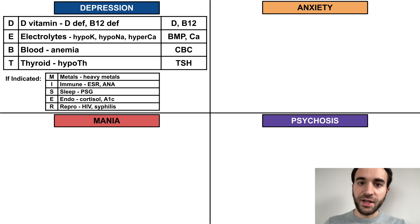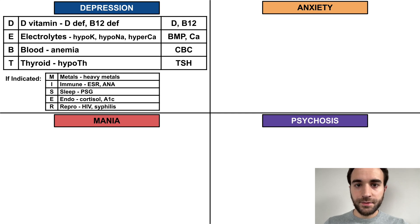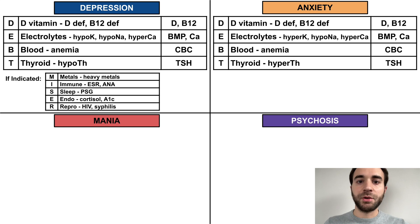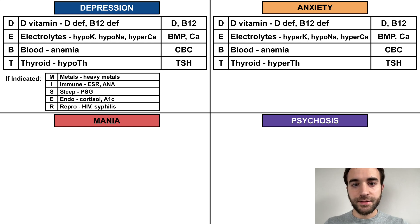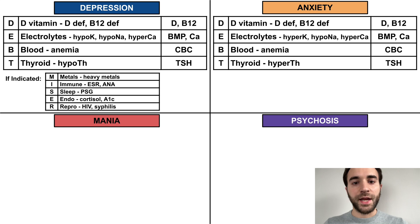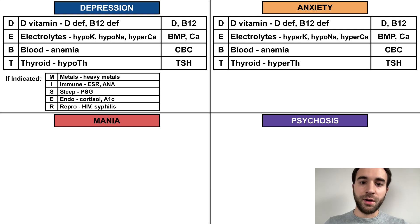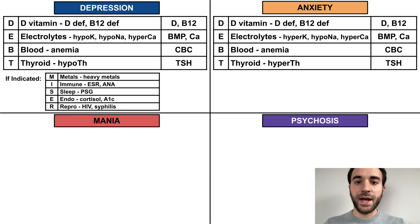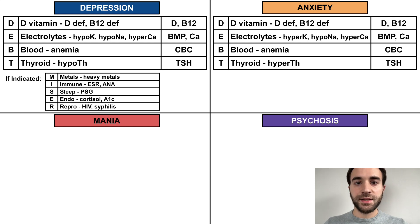And reproductive refers to sexually transmitted infections, including HIV and syphilis. Next, let's discuss anxiety. The common causes of anxiety can be remembered with the same mnemonic, DET. The causes are a bit different — for example, hyperkalemia instead of hypokalemia, and hyperthyroidism instead of hypothyroidism — but the mnemonic still applies and the screening tests are the same.